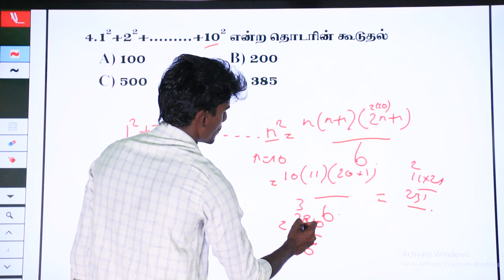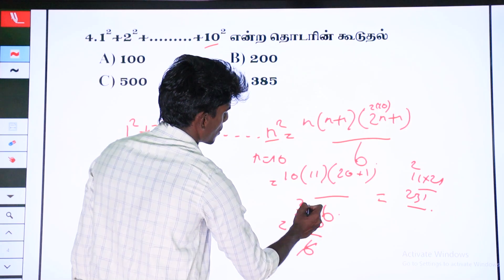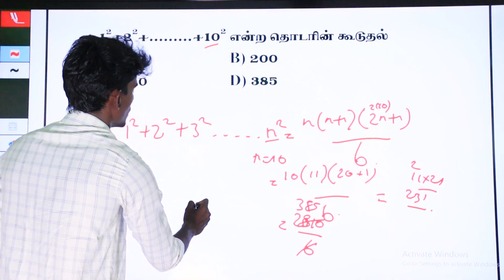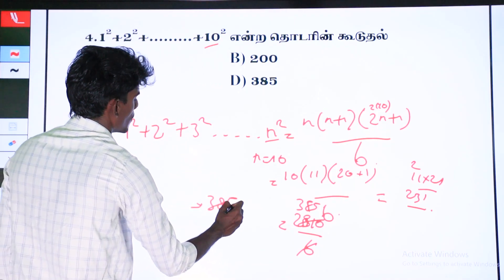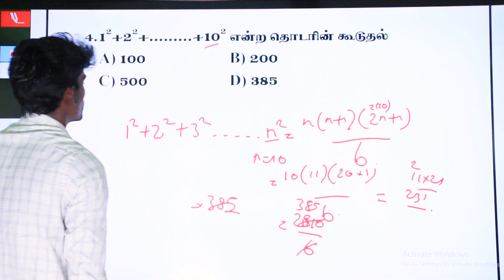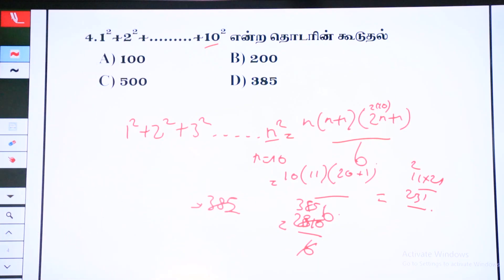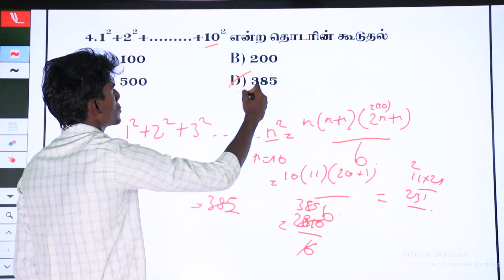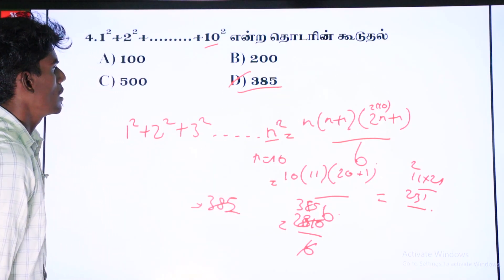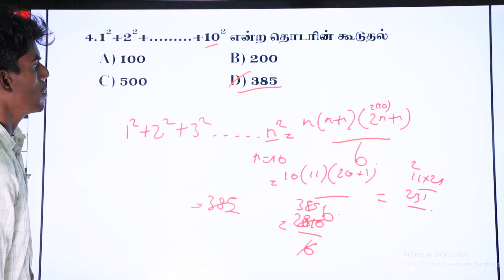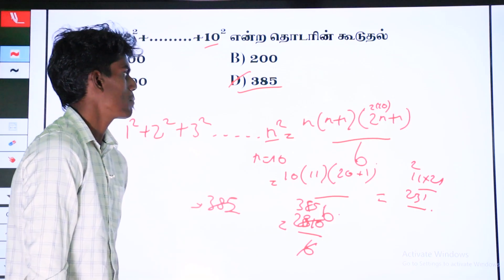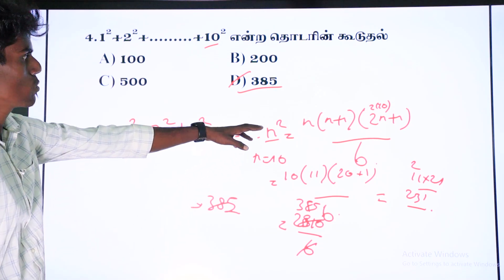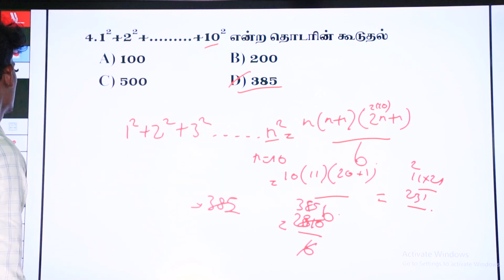That is, if you add 1 square to 10 square, you will get the answer. 385. That is the answer. If you want to know the formula, it will be easy: n into n plus 1 into 2n plus 1 by 6. That is the square formula: n into n plus 1 into 2n plus 1 by 6.